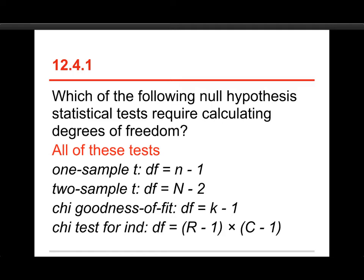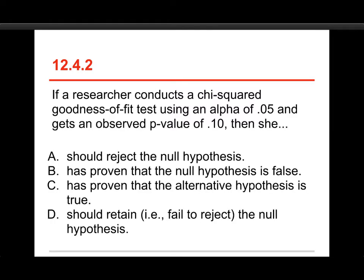We also use degrees of freedom in the analysis of variance and in correlation and regression. The only one where we don't use it, as we saw earlier, is the z-test.